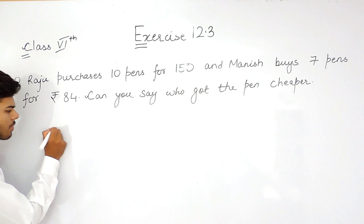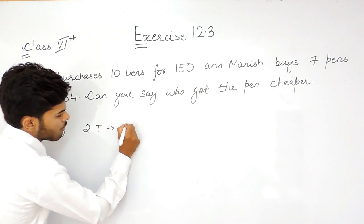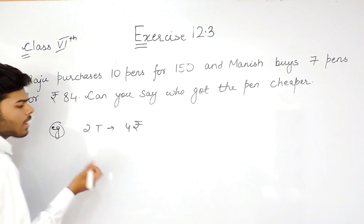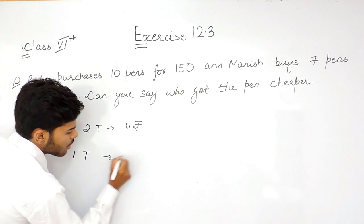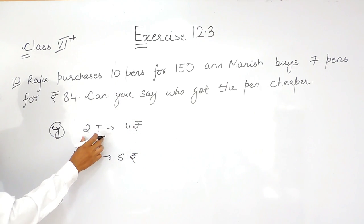For example, if you have 2 toffees for 4 rupees and another person has 1 toffee for 6 rupees, we can equate the number of toffees.